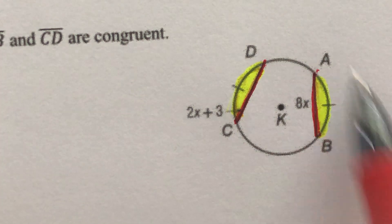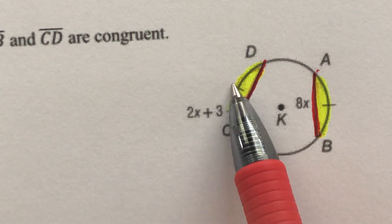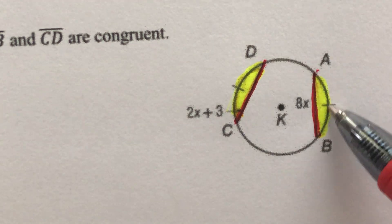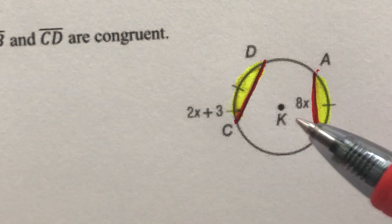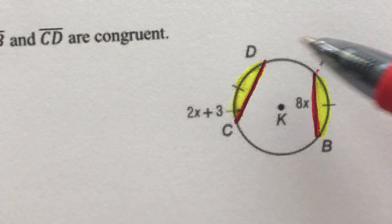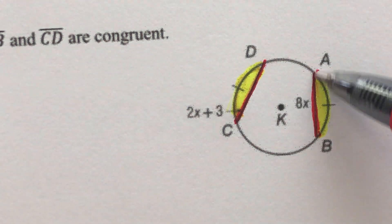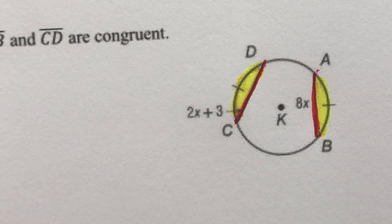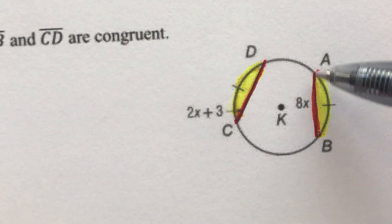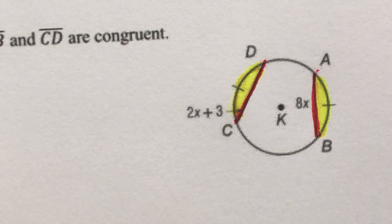In this example, arc CD is congruent to arc AB. Since the arcs are congruent, we know the chords connecting those two points are also congruent. So chord CD is congruent to chord AB. Once I know that, I can solve for X by setting 8X — the length of this chord — equal to 2X plus 3, which is the length of this chord.